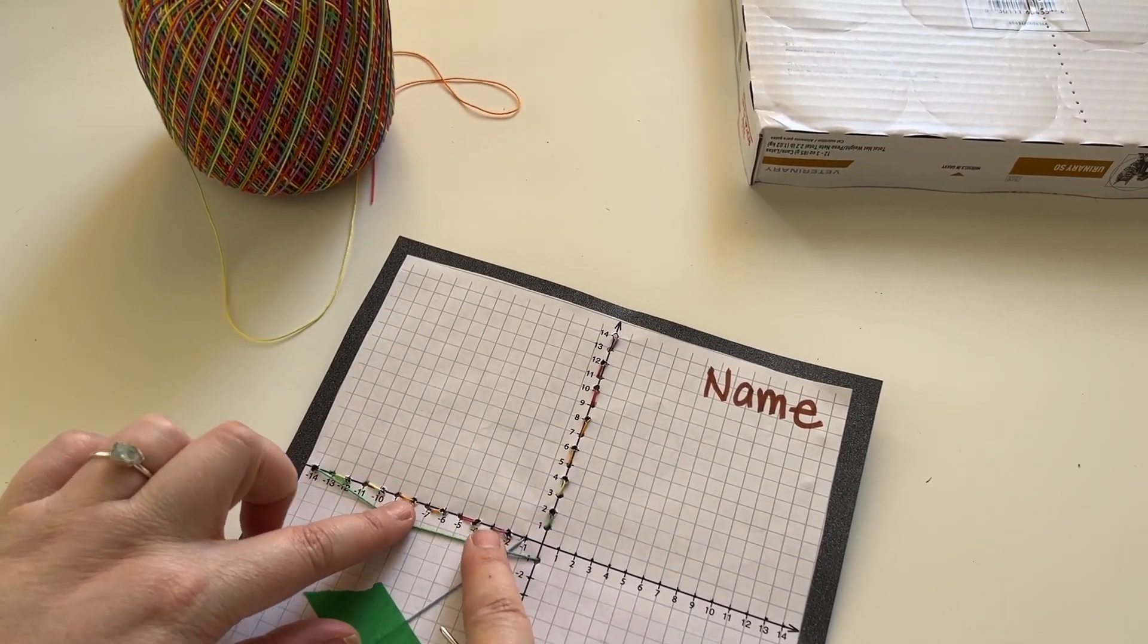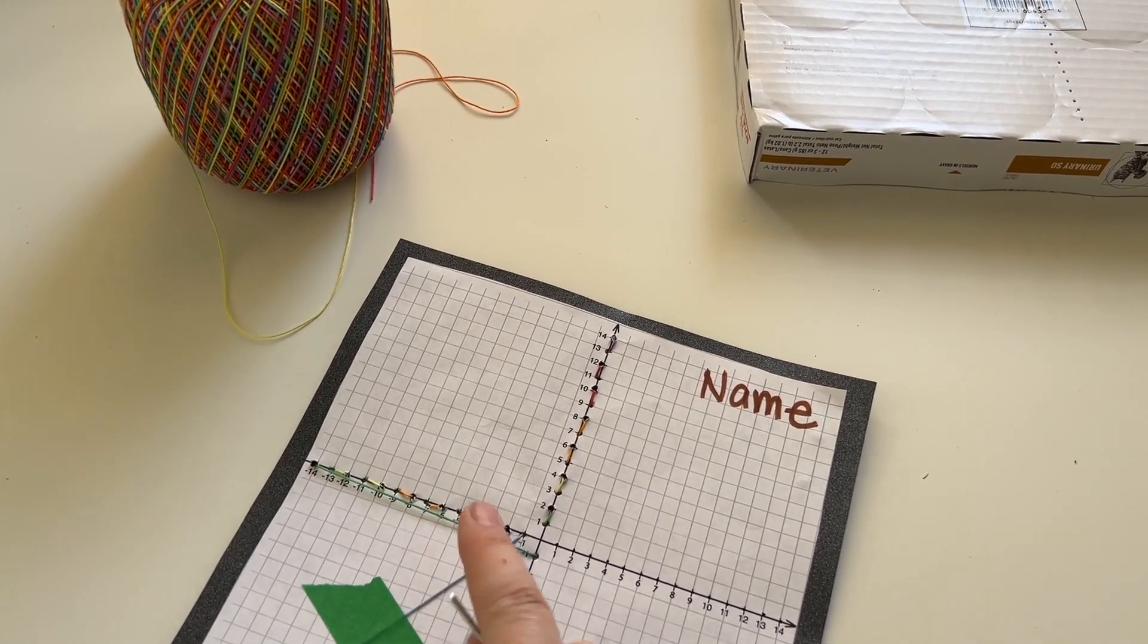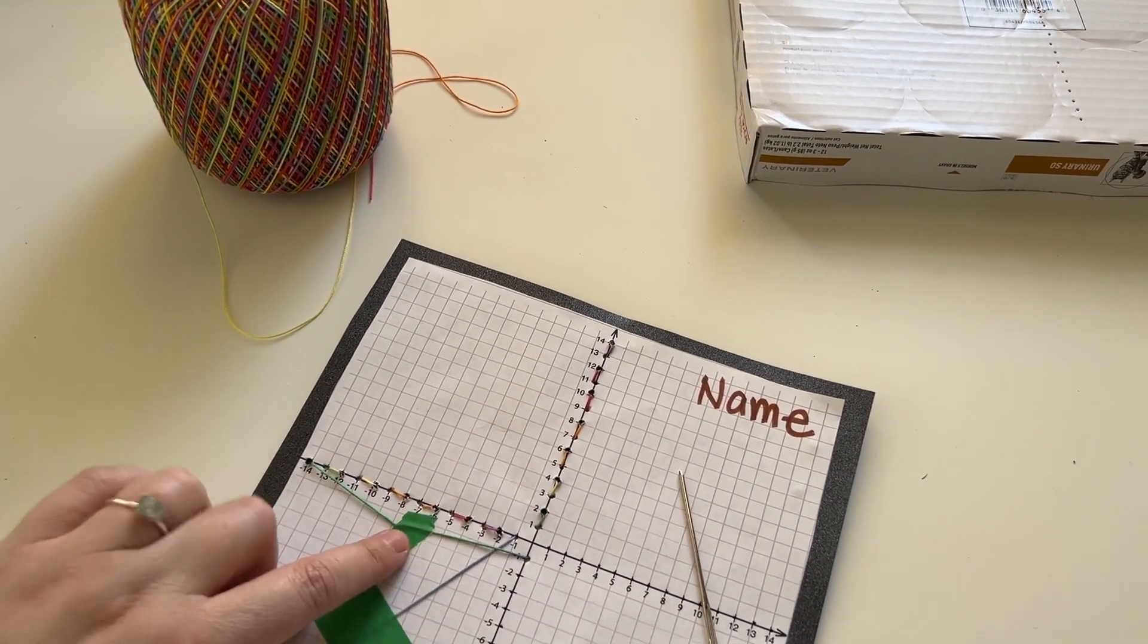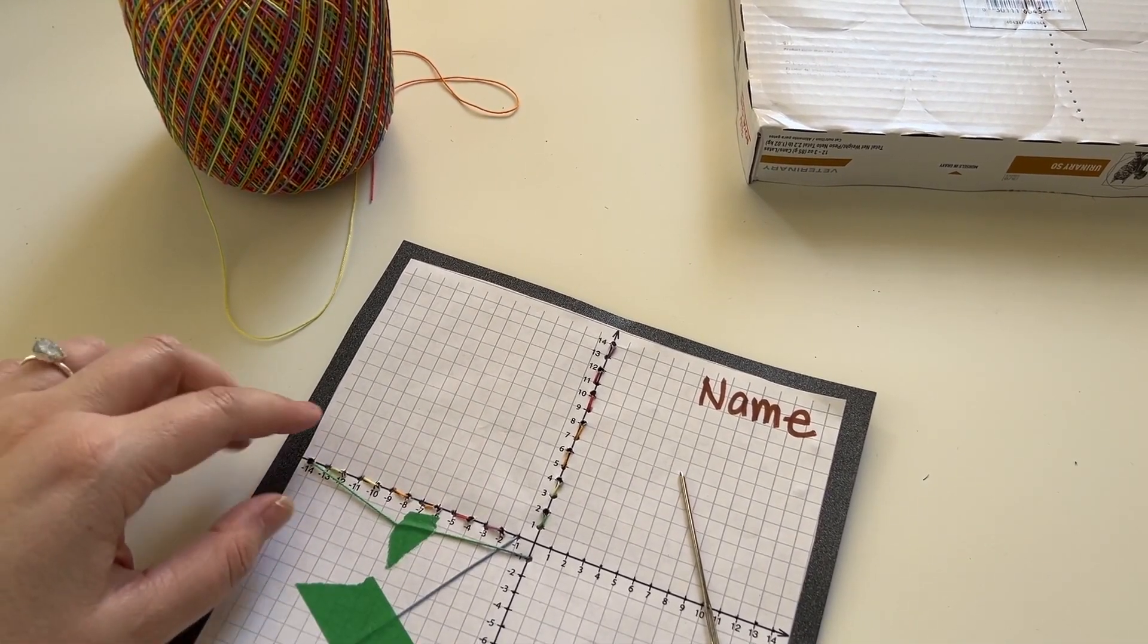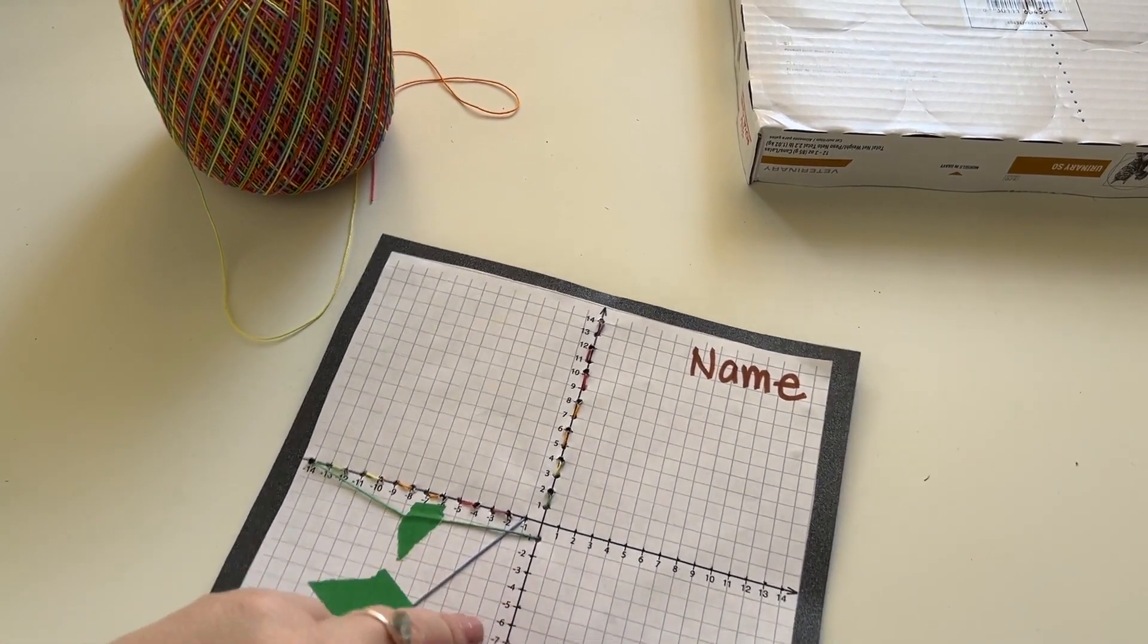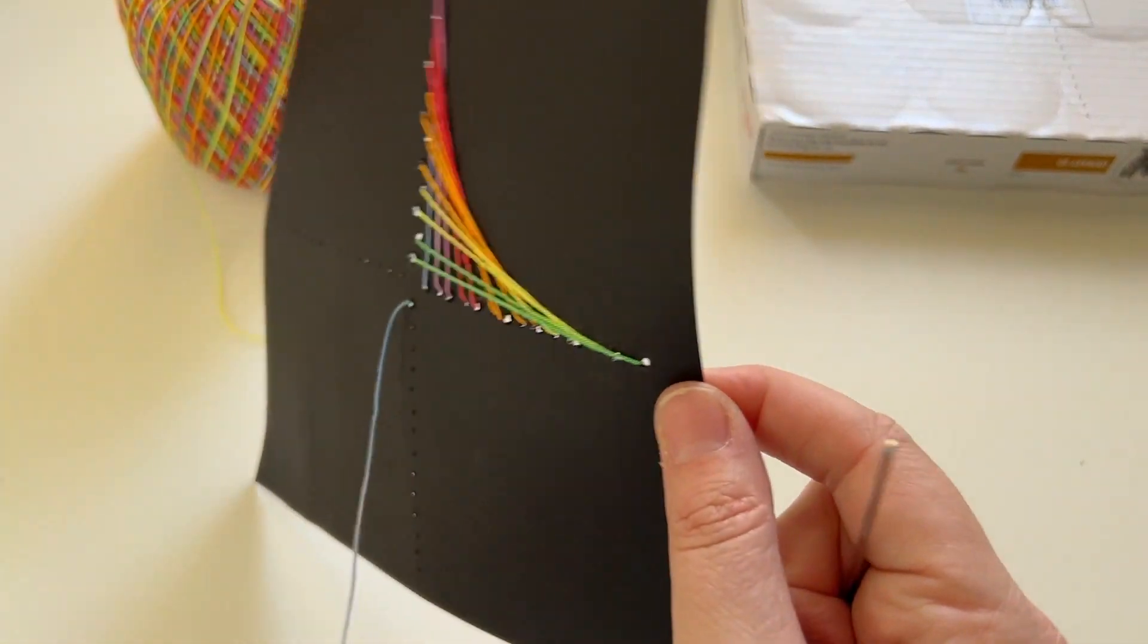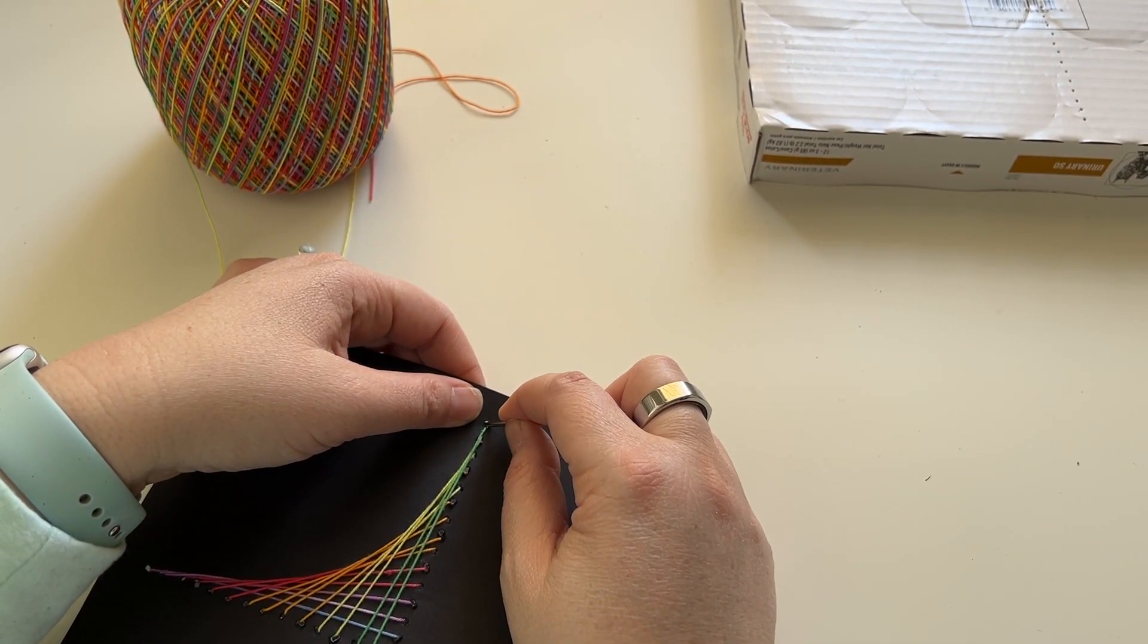If your string is covering up your coordinate numbers, you can go ahead and grab another little piece and tape it out of the way. So we'll go negative one on the back side, and then I'm going to go up here to the inside.